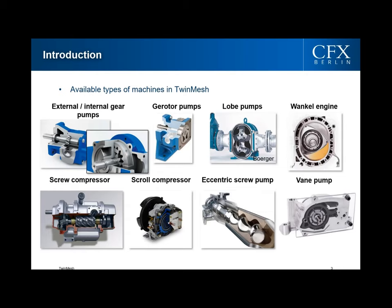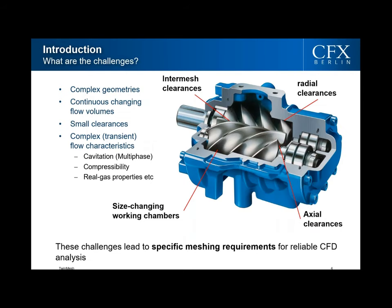Here you can see many types of machines that can transport different fluids from inlet to outlet. For liquids we have external or internal gear pumps, G-rotor pumps, lobe pumps. For compressed gases we have screw compressors or expanders, scroll compressors or expanders, and the eccentric screw pump for fluids. The vane pump is for gases, and the Wankel engine is a special type where combustion also has to be taken into account.